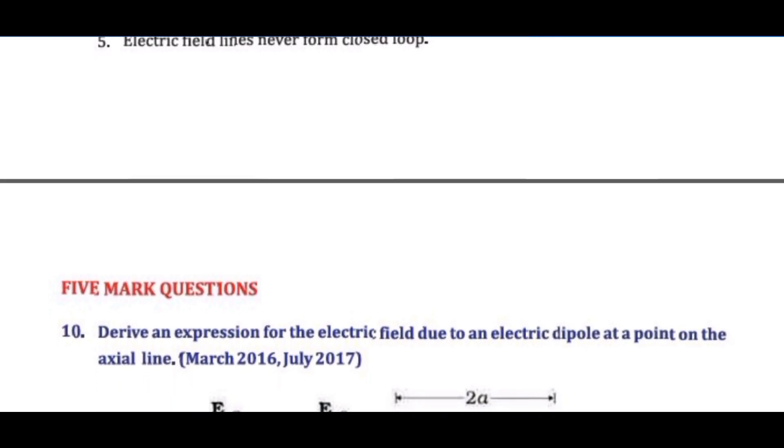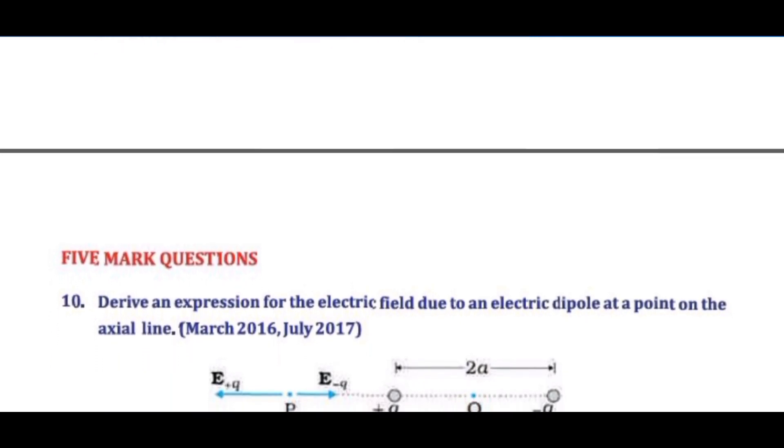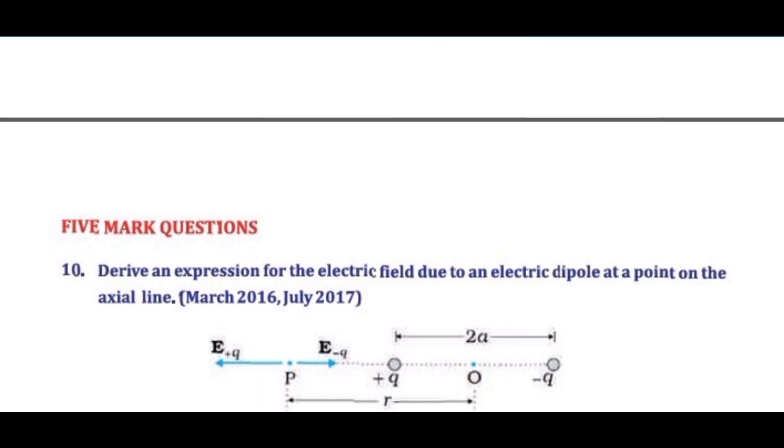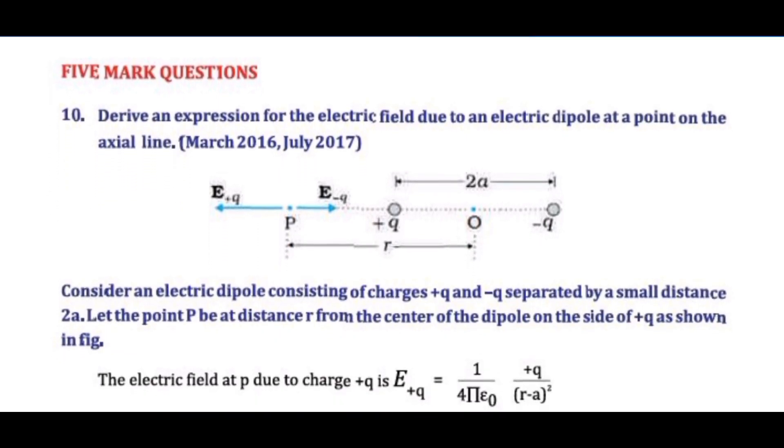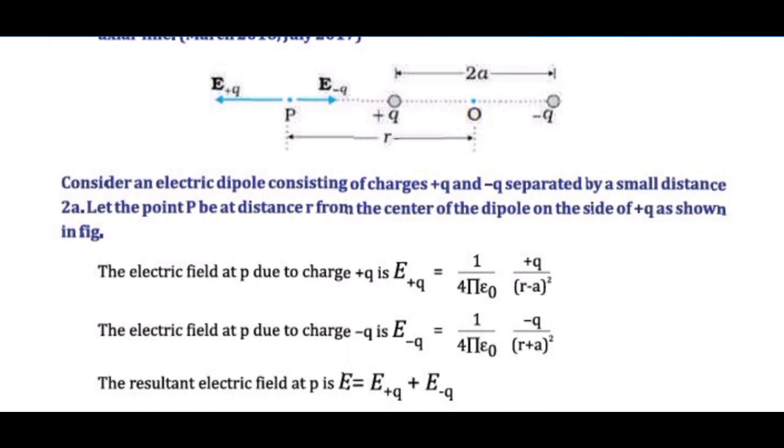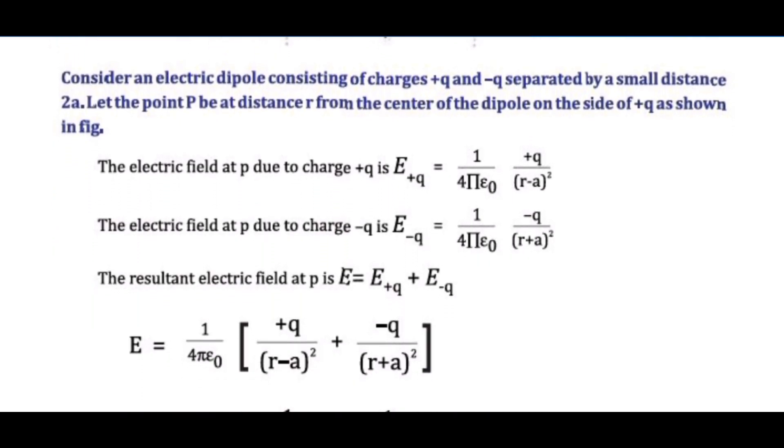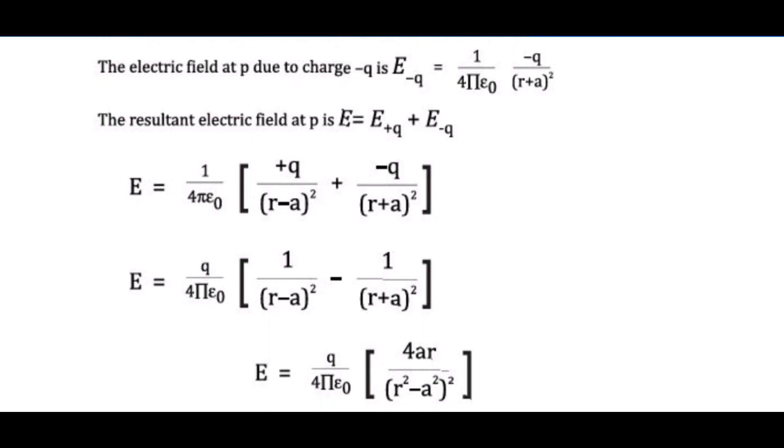Question 10: Derive an expression for the electric field due to an electric dipole at a point on the axial line. Answer: To be derived using formula and steps. E equals 1 over 4 pi epsilon 0 times 2P over R cubed for axial line where P equals dipole moment.